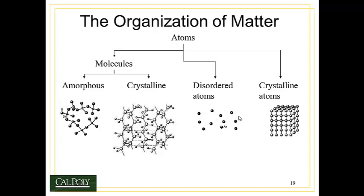We also have to understand not just how small atoms are, but just how they organize into three-dimensional space. It turns out that atoms organize either individually by themselves or they bond together to form molecules. This creates four different ways that matter is organized. Amorphous molecules are random groupings of molecules that have no regular pattern to them, whereas crystalline molecules are made up of long chains of atoms bonded together by covalent or ionic bonds that form into crystals. We could also have individual atoms that are disordered or amorphous.